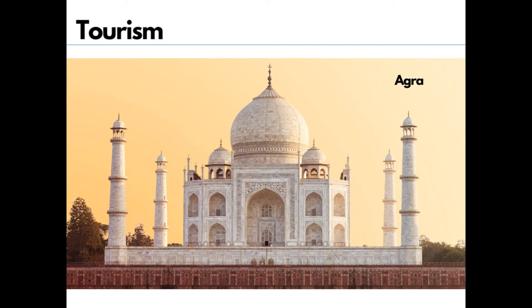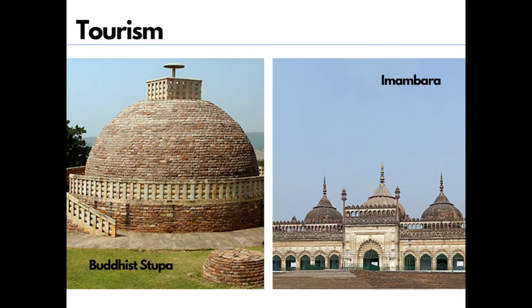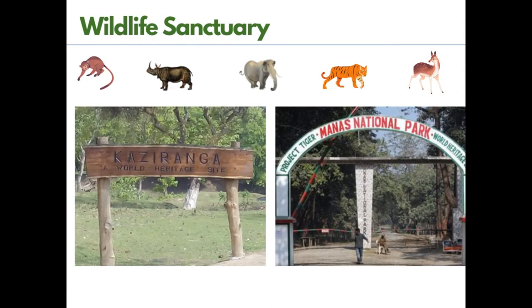The Taj Mahal is on the banks of the river Yamuna in Agra. Allahabad is at the confluence of rivers Ganga and Yamuna. Buddhist stupas in Uttar Pradesh and Bihar, Imambara in Lucknow, and Kaziranga and Manas wildlife sanctuaries in Assam and Arunachal Pradesh are some of the important tourist destinations in this basin.